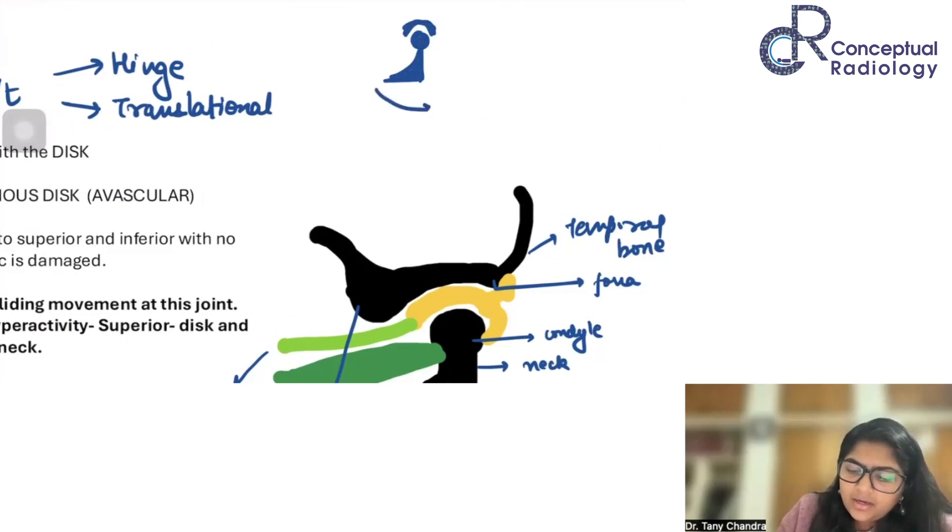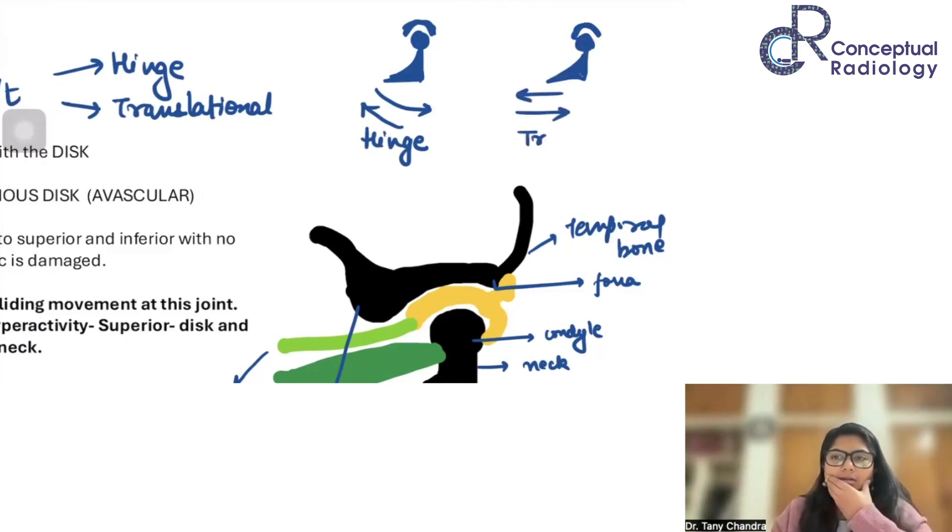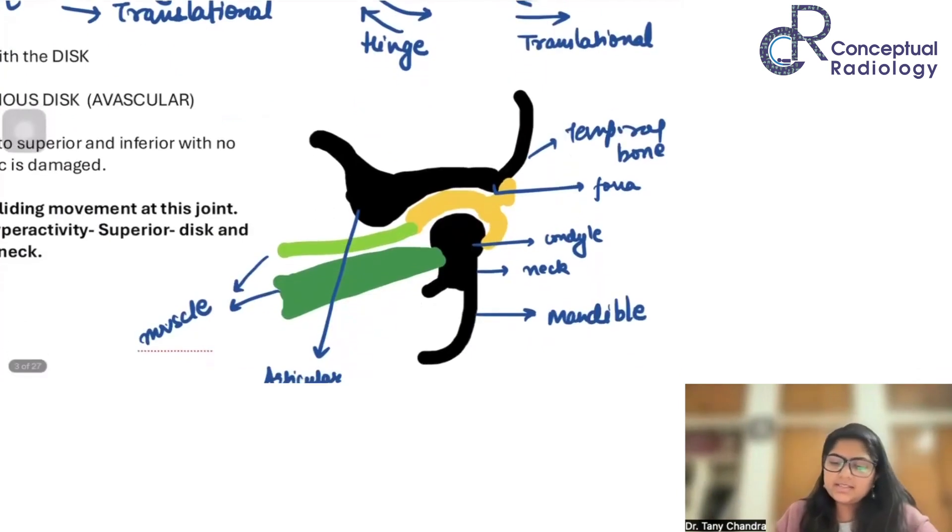If we are doing a hinge-like movement, we are going to move it down and up. We normally do that when we open and close our mouth. So, this is the hinge movement. Next, we can translate a little bit also. Translation means that we move a little forward and backward also. We can do a translational movement at this also. That is why it has these two components.